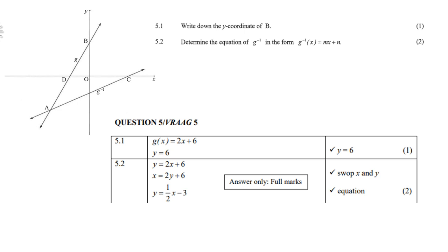Determine the equation of the inverse. So the inverse, remember now, we switch X and Y. So Y becomes X and X becomes Y. So Y equals 2X plus 6, which belongs to the graph of B, becomes now X equals 2Y plus 6. Then you make Y the subject, and the answer is Y equals a half X minus 3.